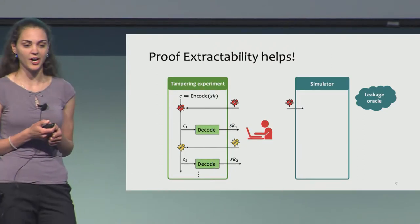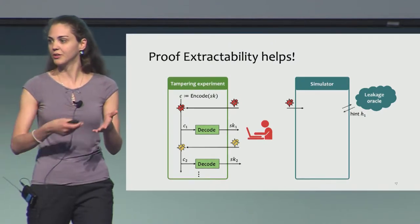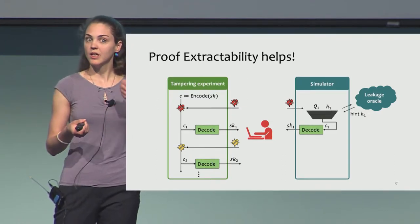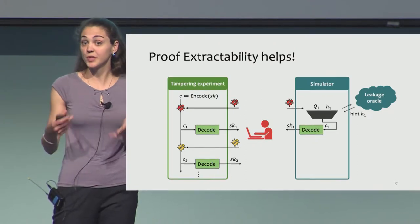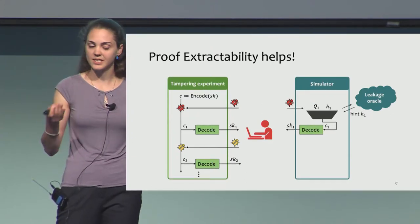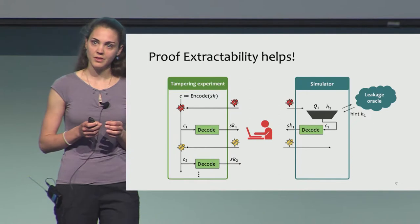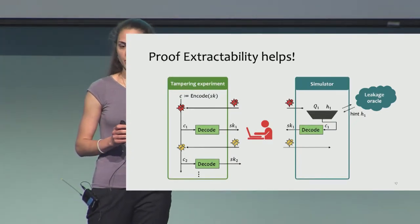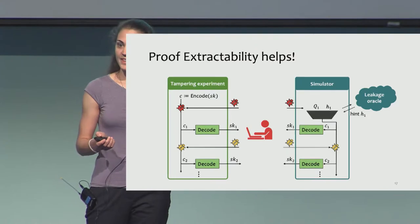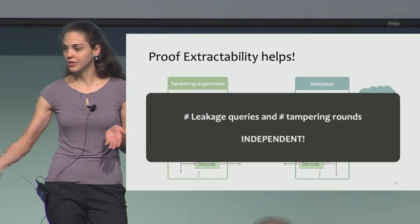Let me show you how this helps. For the first round of tampering, the simulator gets the tampering algorithm, again asks the leakage oracle to simulate the tampering experiment and return a hint. Given this hint, we are able to extract the identity and a proof, which means we have the entire codeword C1. For the second tampering algorithm, we don't have to ask a leakage query anymore — we have C1 and can just simulate the tampering experiment without further leakage. As you can see, the number of leakage queries is now independent of the number of tampering rounds.